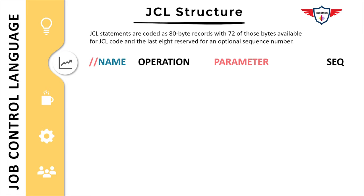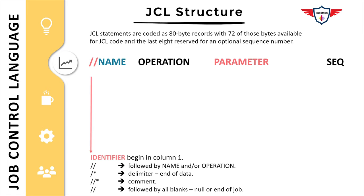The first element is the identifier, which begins in column one, and there are four different kinds. If you have two forward slashes followed by a name and operator, it would be a JOB statement, DD statement, or EXEC statement. If you have one forward slash and an asterisk, it marks the end of data — for example, when passing data in SYSIN. Two forward slashes and an asterisk are used for comments. Two forward slashes followed by all blanks is treated as null or end of job.